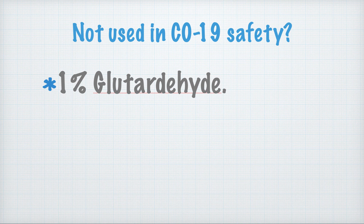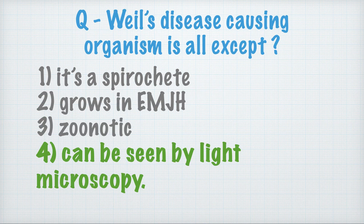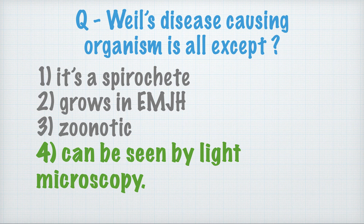Weil's disease causing organism — seen in all except: it is a spirochete (correct), it grows in EMJH medium (correct), it is zoonotic (correct), and it can be seen by light microscopy — this is false. The correct answer is that it cannot be seen by light microscopy.